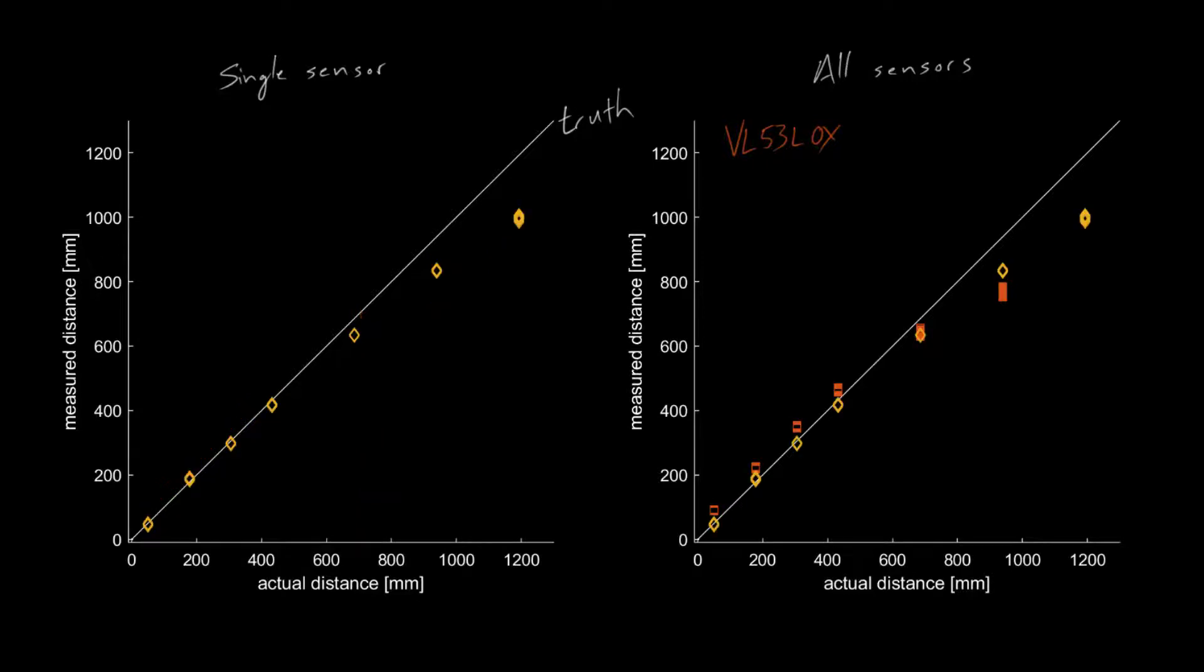So the next sensor I want to look at is the VL53L1X. This is just like the VL53L0X. It just has a longer range. So you can see here at the beginning, it has good readings too. And then there's some drop-off. And it does manage to take a reading at a further distance. But it's going to need some calibration in order to make those readings meaningful.